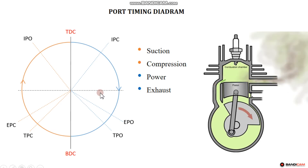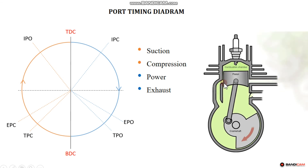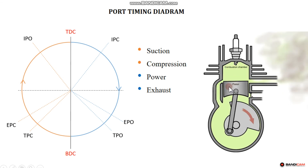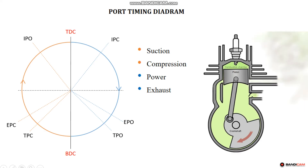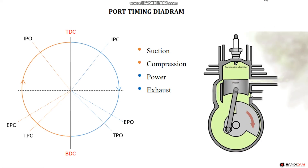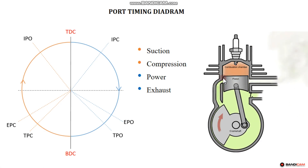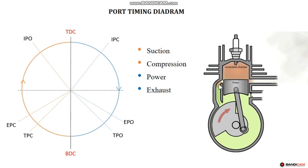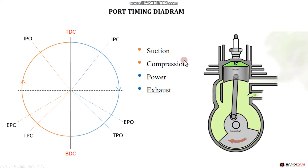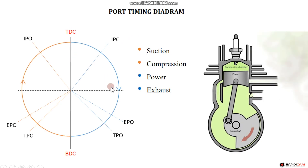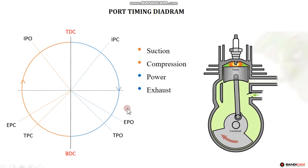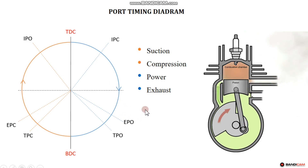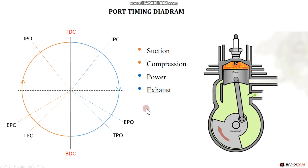For the port timing diagram: the port starts to open slightly, then opens fully, and then closes fully. The transfer port follows a similar pattern — slight open, then fully open, then full close. As the charge is going down, the ports operate in this sequence. This is the actual port timing diagram for a two-stroke engine. Thank you.